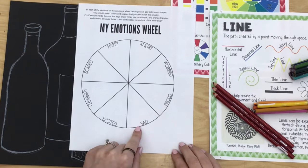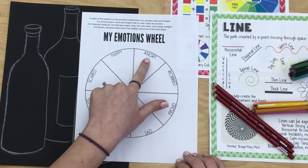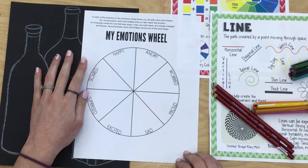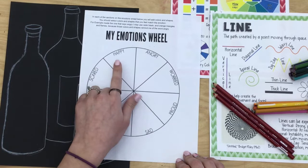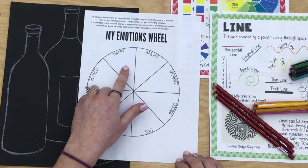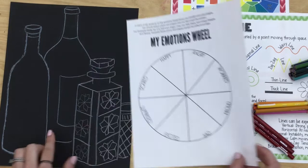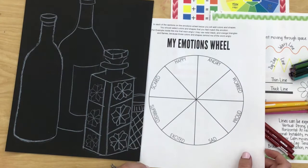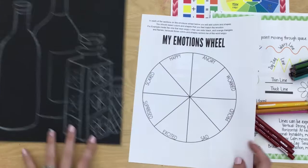Today we are going to start brainstorming ideas for how to represent the emotions on this color wheel using colors and shapes. For example, you'll color in the section for the word 'happy' using colors and shapes that remind you of that word. You will then choose three or four of these emotions to color inside the bottles you've drawn earlier. Each bottle will represent a different emotion.